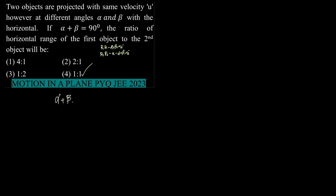Let's now discuss this question. We have α + β given to us as 90 degrees. Let's say the object is projected with velocity u and there are two ranges here, R1 and R2. R1 is projected at an angle α and R2 is projected at an angle β.